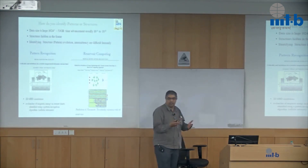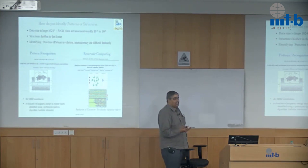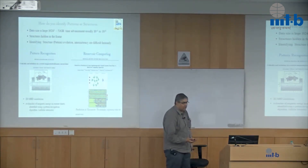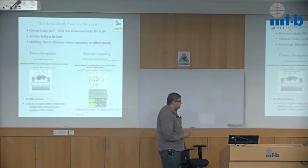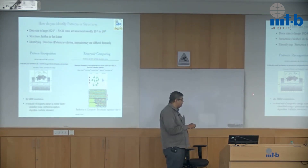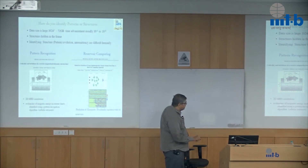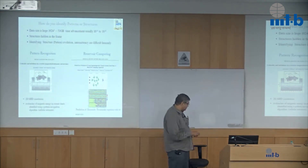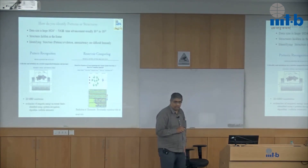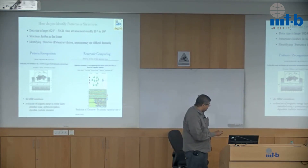These structures are not easily visible; you have to search for them manually. If we are able to use machine learning and artificial intelligence in these studies, we will be able to identify these structures. There have been certain attempts already mentioned in the paper. One such work was pattern recognition in two-dimensional MHD simulations, where they tried to identify avalanches of magnetic energy in del cross B structures (the current sheets) using cellular automata algorithms.